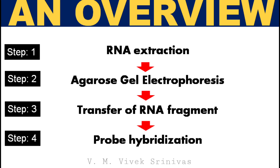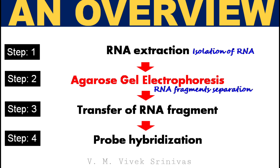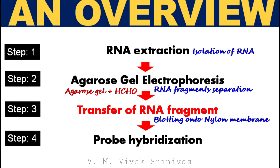This is an overview of the northern blotting technique. The first step is RNA extraction, that is isolation of total RNA. The second step is agarose gel electrophoresis for separation of the RNA fragments over the agarose gel containing formaldehyde. The third step is transfer of the RNA fragment — that is blotting — from the gel to the nylon membrane. The final step is probe hybridization, where a DNA probe is used to identify the RNA sequence.